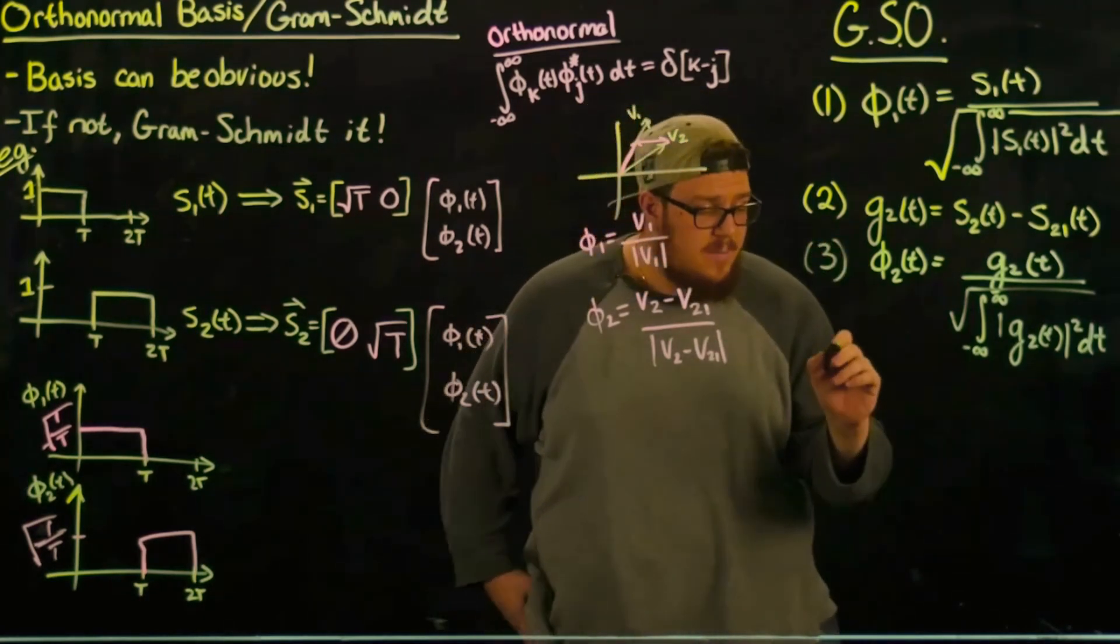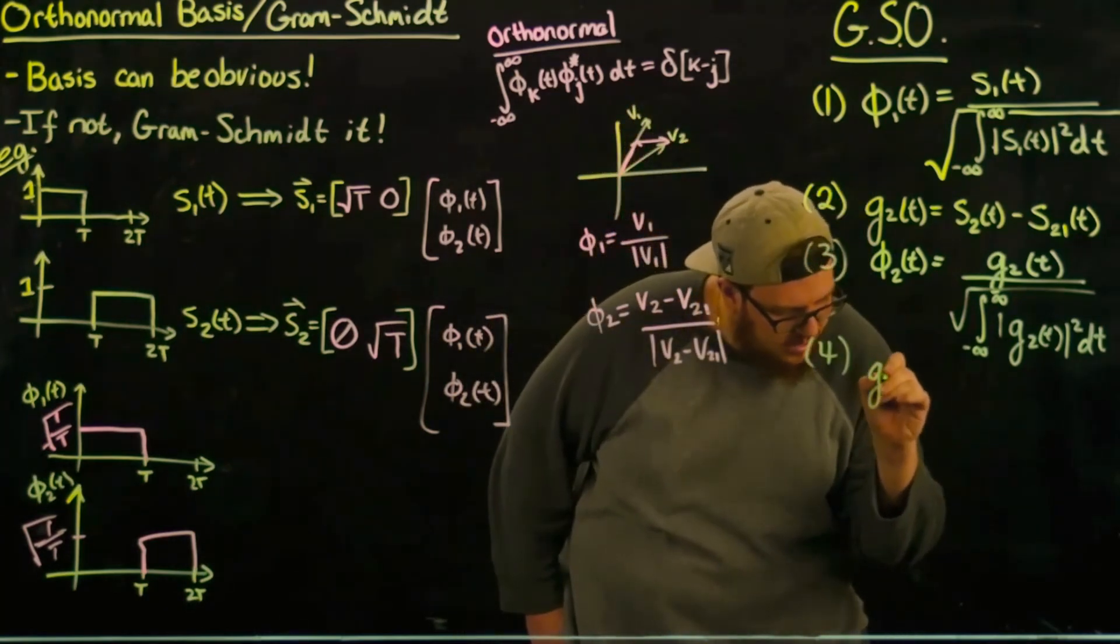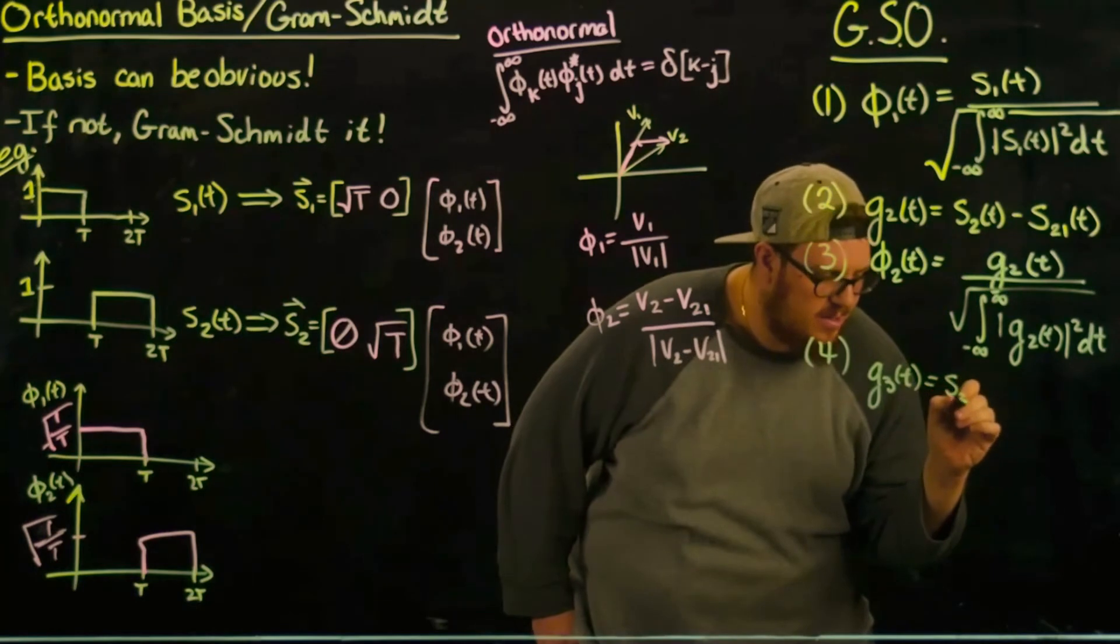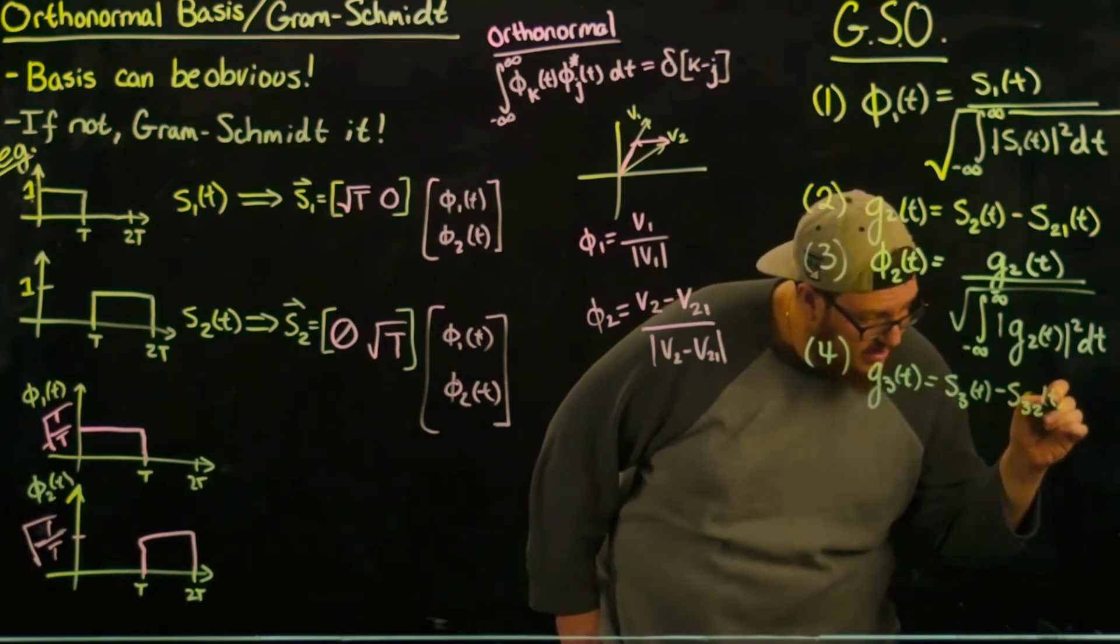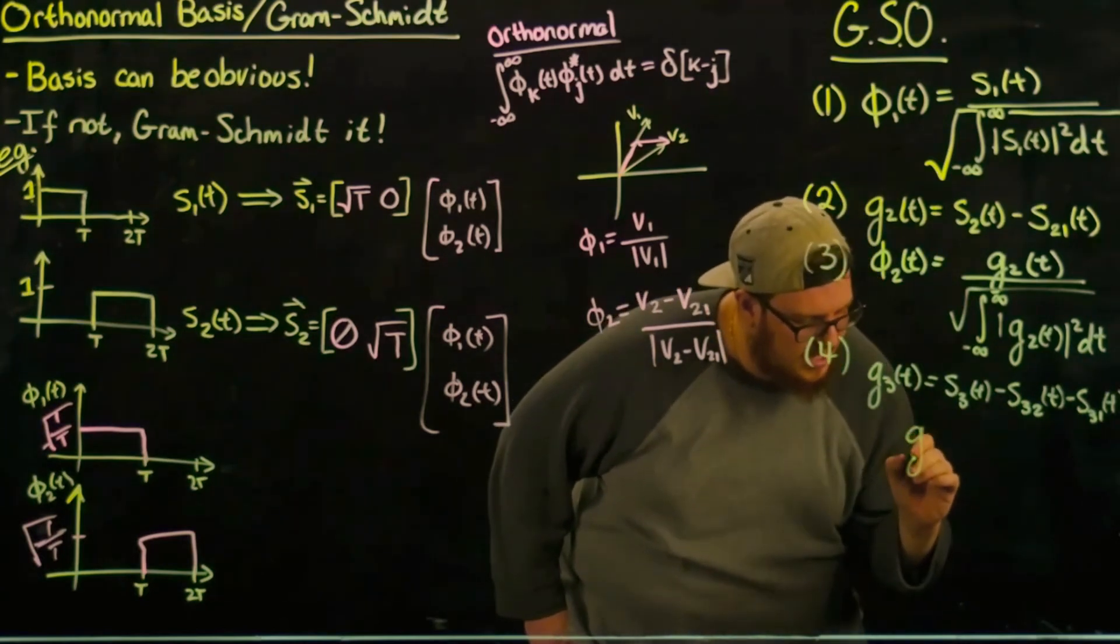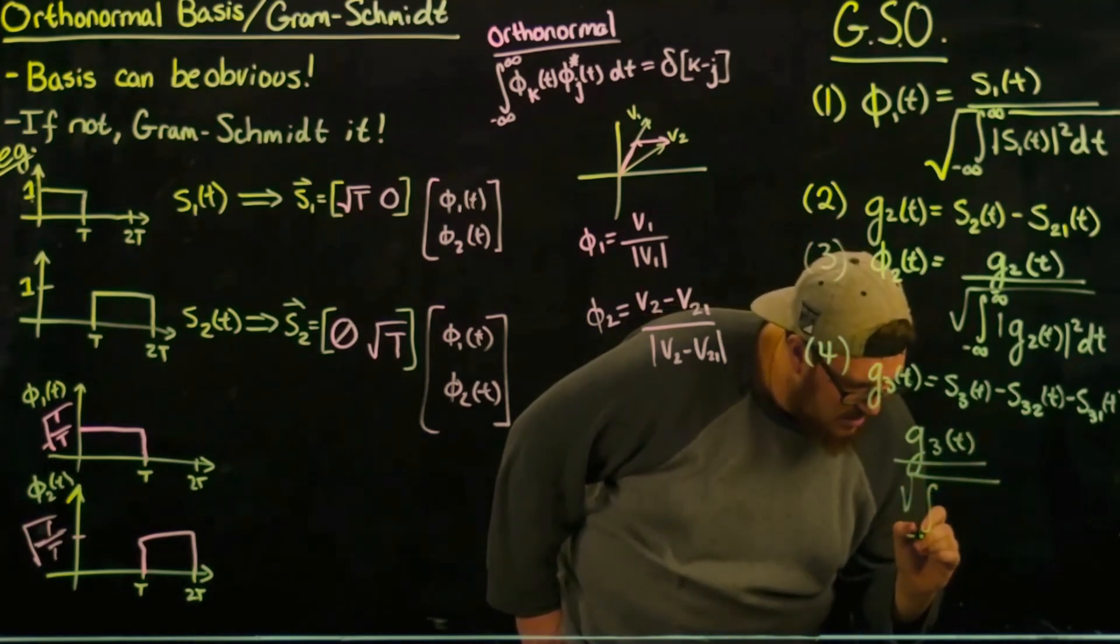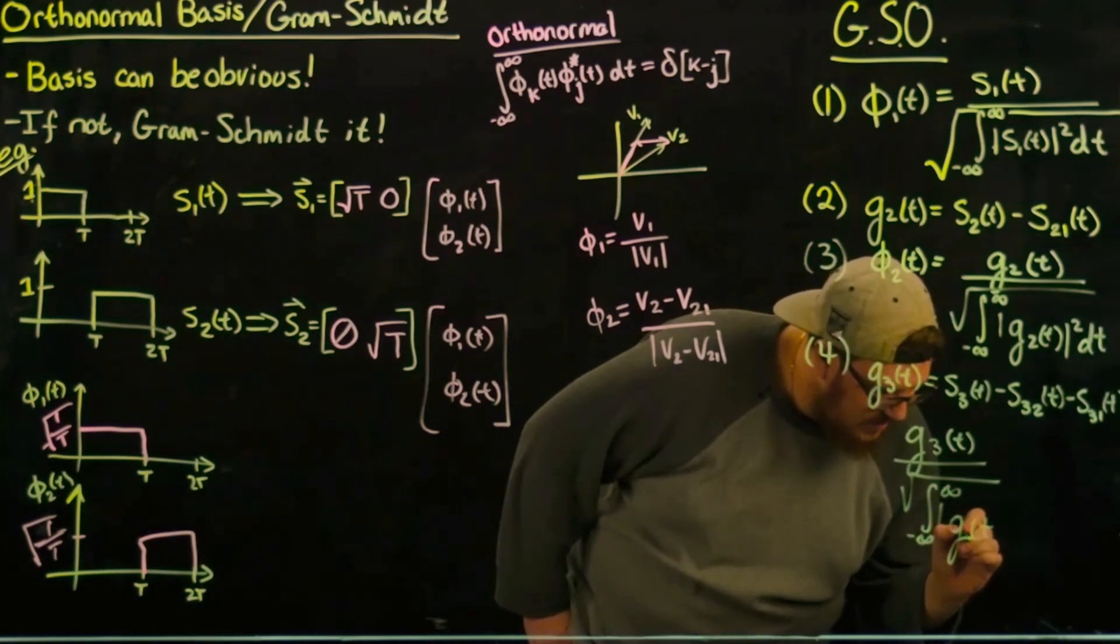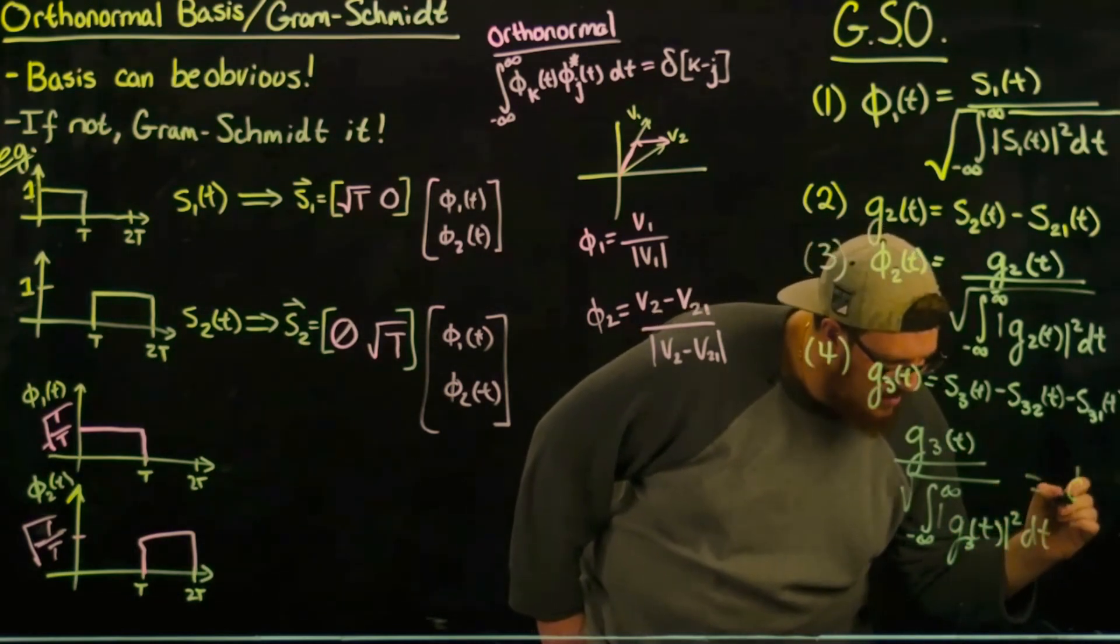I'll go through step three and four but then after this it'll just kind of be an and so on situation. So we're going to call g_3(t) equal to the third signal minus the projection of the third signal onto the second basis function minus the projection of the third signal onto the first basis function. And then we're going to say that φ_3(t) equals g_3(t) divided by the square root of the integral from negative infinity to infinity of the magnitude squared of g_3(t) dt.